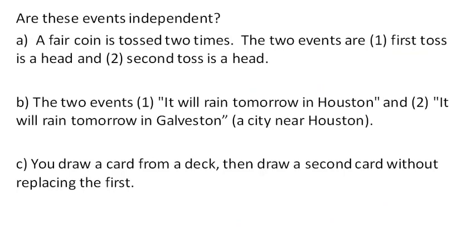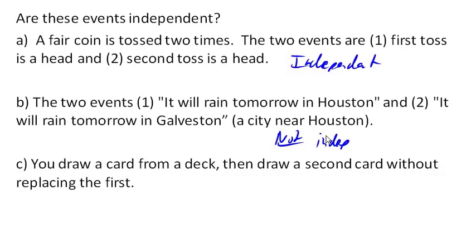Independence means that the result of the coin flip does not depend on or affect the result of the roll of the die. For example, suppose we toss a fair coin twice. The first event is the first toss, and the second event is whether the second toss is heads. Are these independent? Yes — because the result of the second coin toss does not depend upon the first one. How about whether it will rain tomorrow in Houston and whether it will rain tomorrow in Galveston, a city near Houston? These are not independent because the cities are close together and likely to have similar weather patterns.